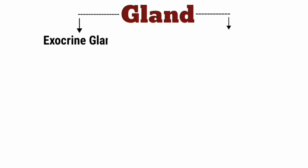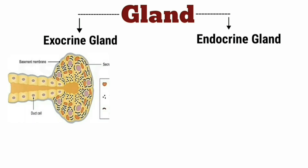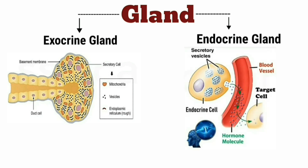In our body there are two glands: first, exocrine glands, and second, endocrine glands. Exocrine glands have ducts through which they release their secretions. Examples include sweat glands, oil glands, salivary glands, and liver juice. Endocrine glands secrete hormones directly into the blood.